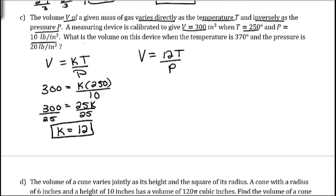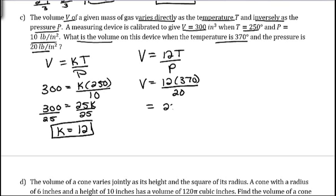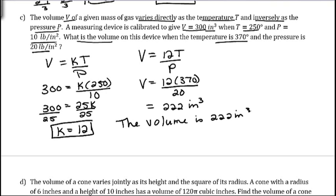Now we use the next bit of information to find the volume. They give us a temperature of 370 and a pressure of 20. So V equals 12 times 370 divided by 20, which gives us 222. The volume unit from the problem is inches cubed. Write a sentence: the volume is 222 inches cubed.